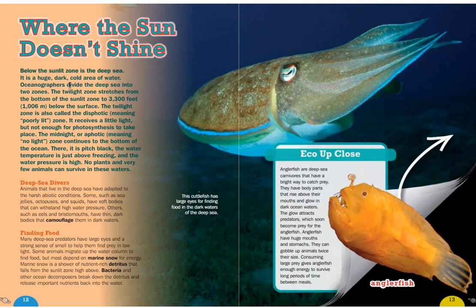Oceanographers divide the deep sea into two zones. The twilight zone, right below the sunlit zone, stretches to 3,300 feet, or 1,006 meters, below the surface. It is also called the dysphotic zone, meaning poorly lit — it receives a little light but not enough for photosynthesis. The midnight zone, or aphotic zone, meaning no light, continues to the bottom of the ocean. It is pitch black, the water temperature is just above freezing, and water pressure is high. No plants and very few animals can survive there.